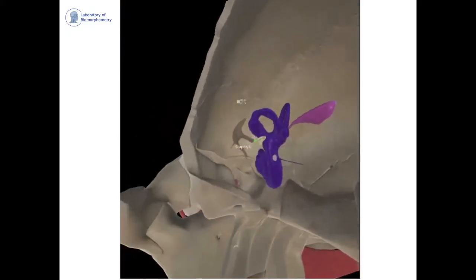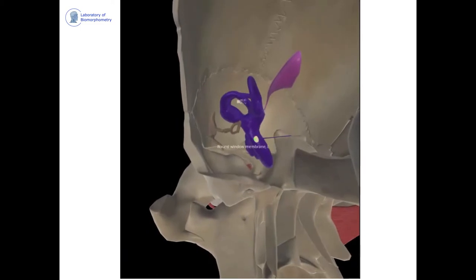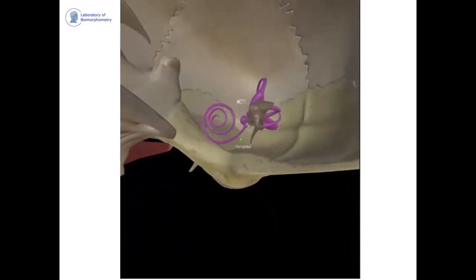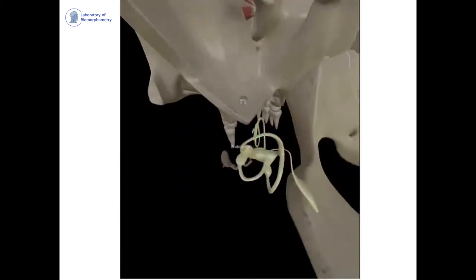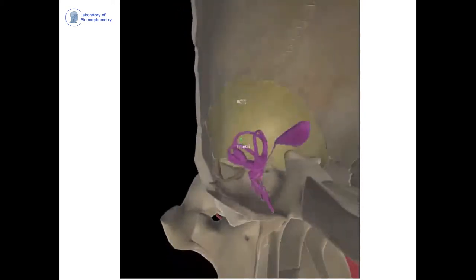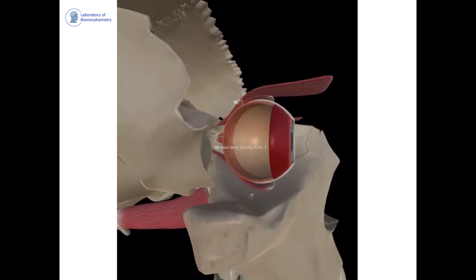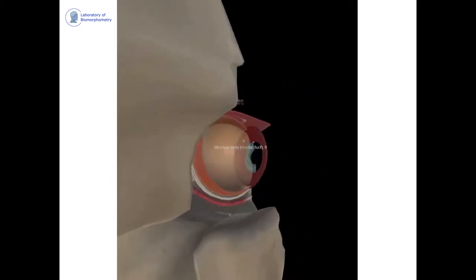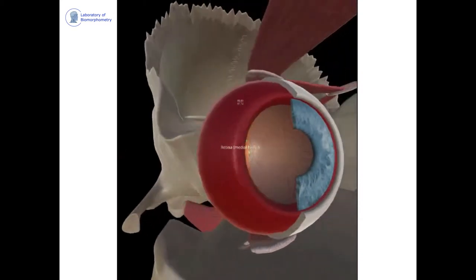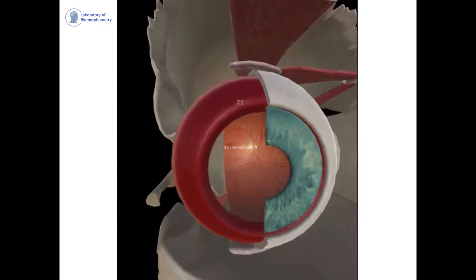That's another model we developed for the inner and middle ear, which is really challenging to learn because we're talking about a structure that is only 2 centimeters long — it's impossible to visualize in a cadaver. That model is really unbelievable for examining the inner ear anatomy. The last one is the eye model — you can see all the different layers of the eye, the retina, the iris, all the parts.